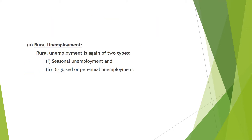Rural unemployment is again of two types: seasonal and disguised or perennial unemployment. Agriculture, though a principal occupation in the rural areas of the country, is seasonal in nature and cannot provide work to the rural population throughout the year. In the absence of multiple cropping systems and subsidiary occupations, a large number of rural population has to sit idle for five to seven months in a year.